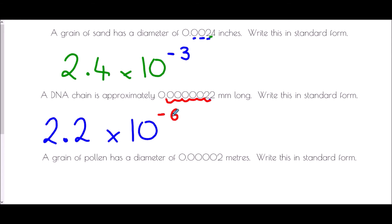A grain of pollen has a diameter of 0.000002 meters — write this in standard form. To get a number between 1 and 10, the decimal point goes right at the end, making it simply 2. Counting the spaces from the original decimal point: 1, 2, 3, 4, 5 — five spaces. Because it's a small number, it's a negative power: 2 × 10⁻⁵.